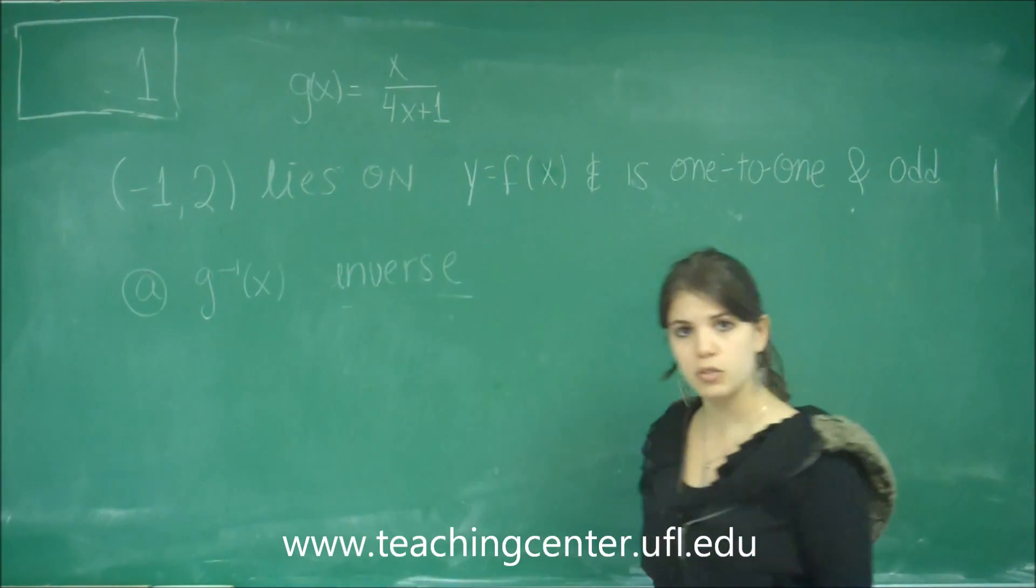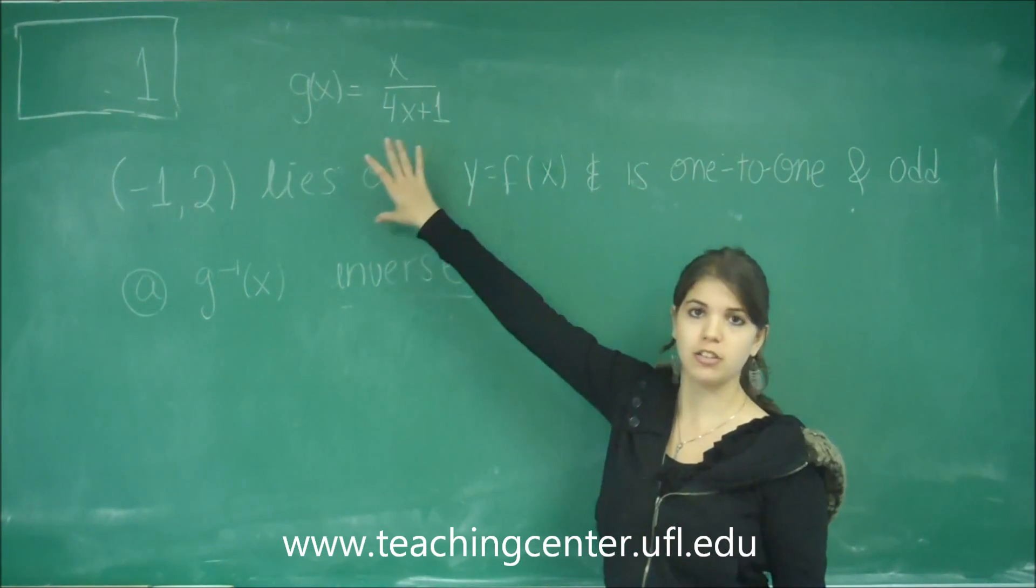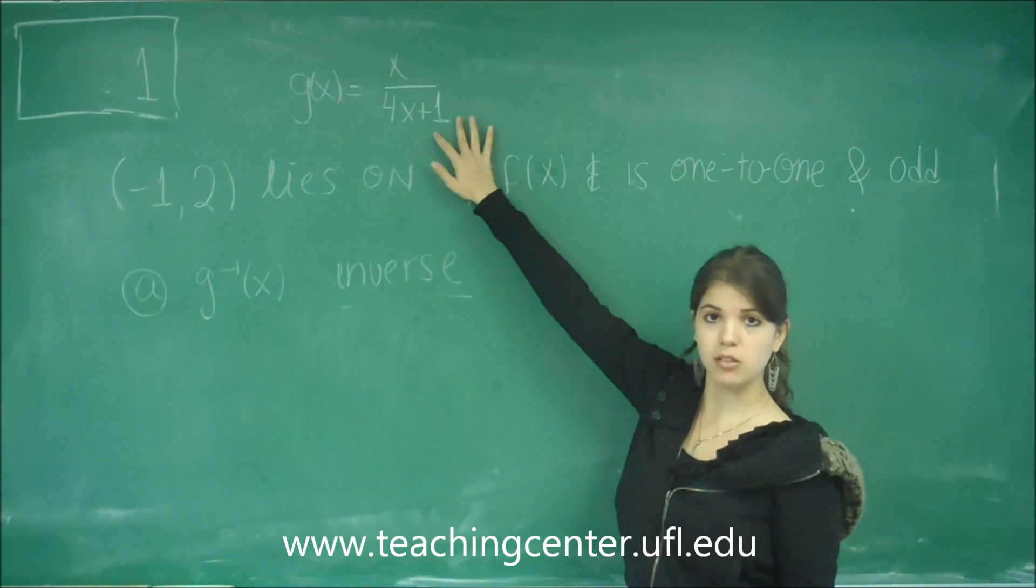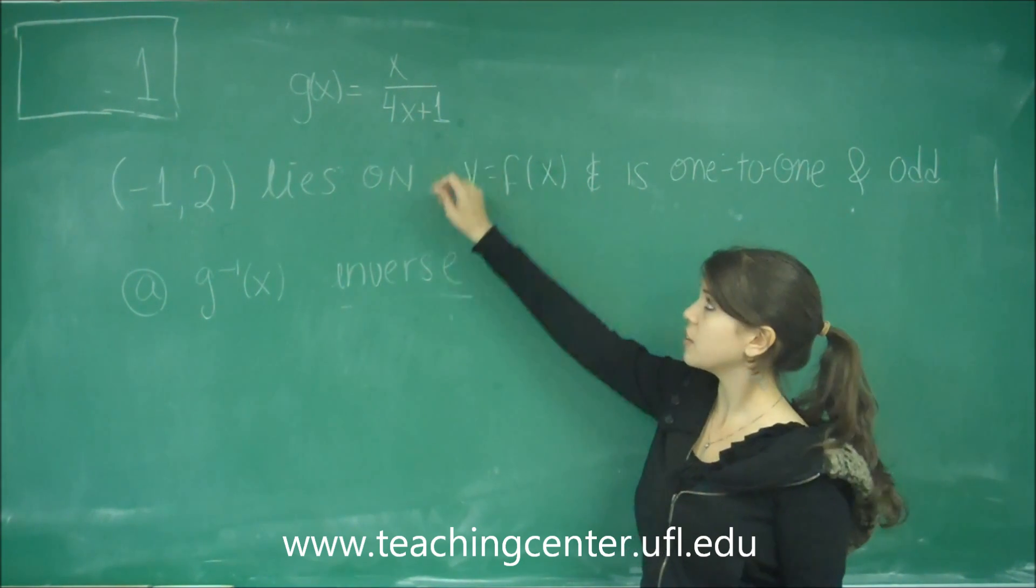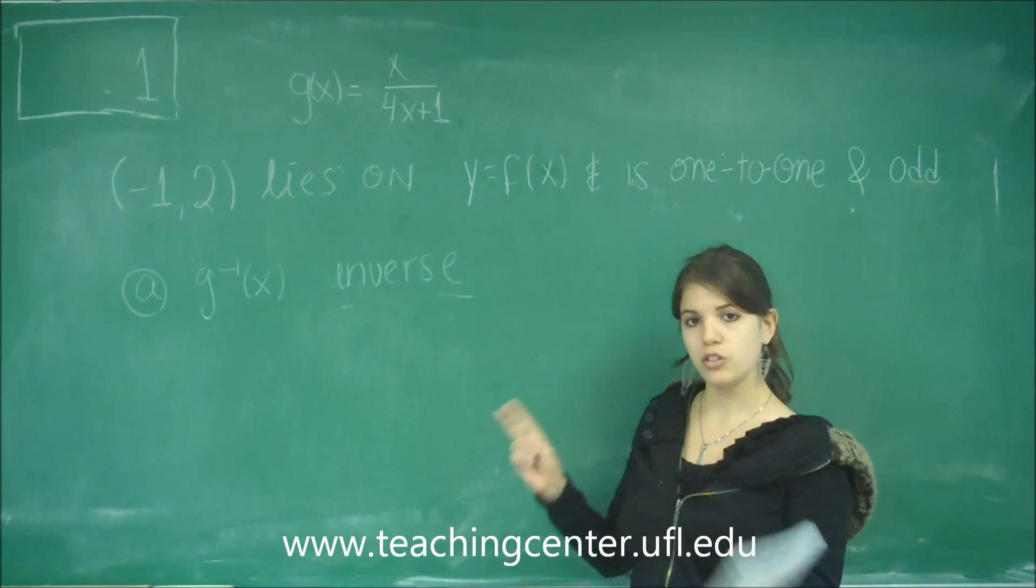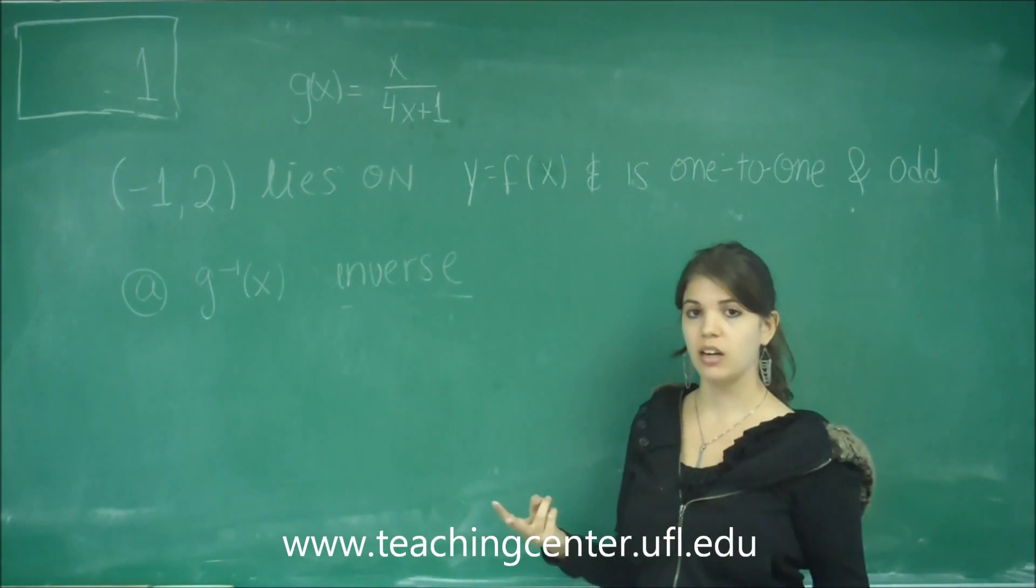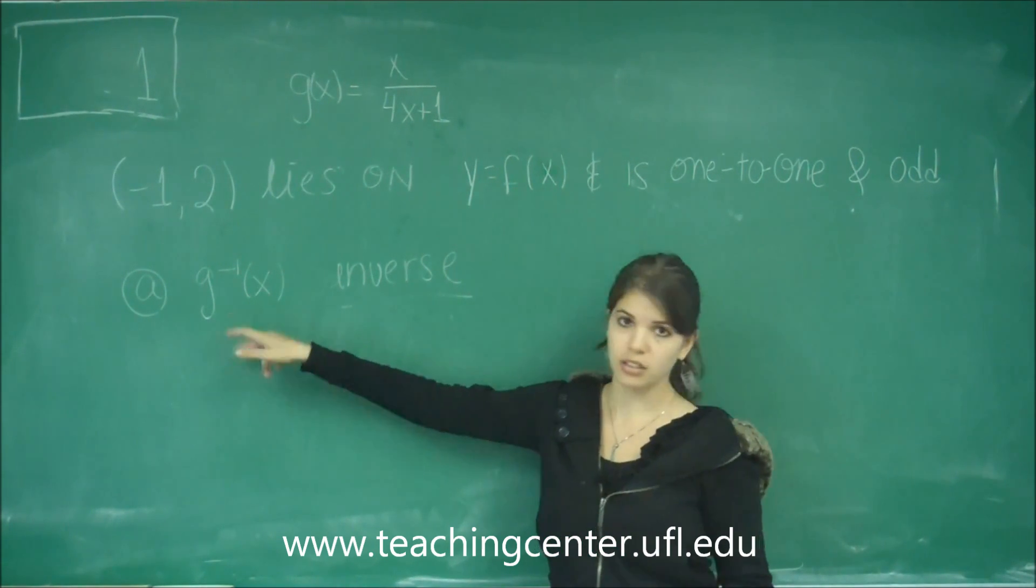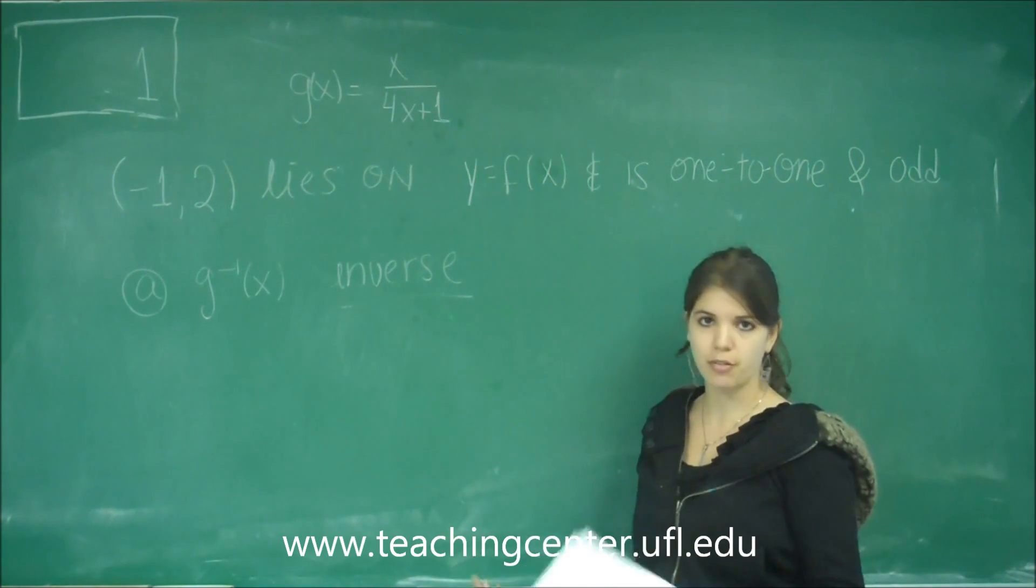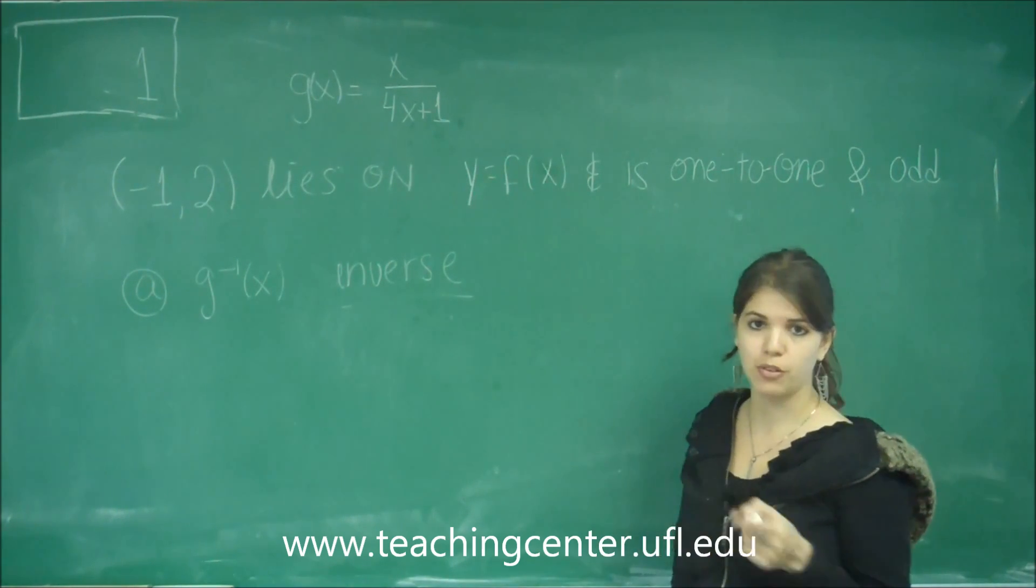For this part we're only looking at g(x) over here. The two ways to find the inverse of g is to either solve for x and then once you solve for x, switch the x and the g inverse around so that you have g inverse equals to whatever. Or you could go ahead and switch them around first and then solve for it. Same thing. I'm going to go and just solve for x first.